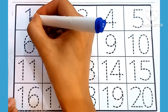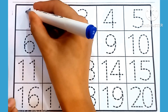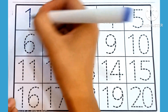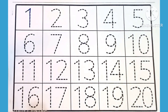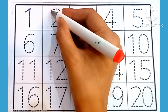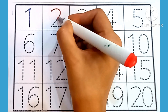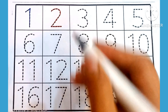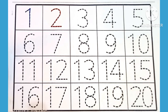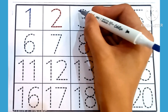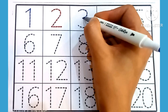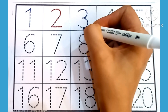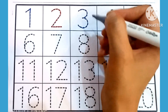First of all, we will write one. One — which is this number? One. Two — which is this number? Two.